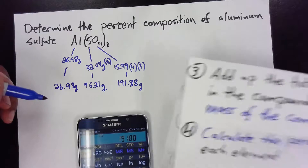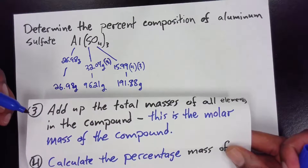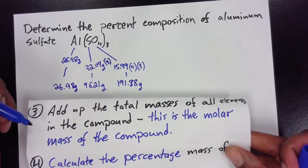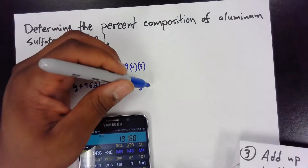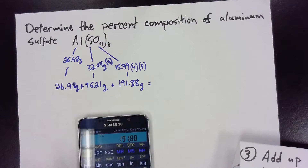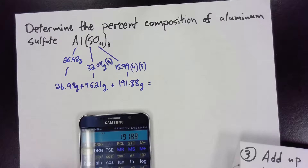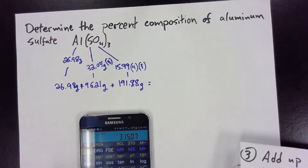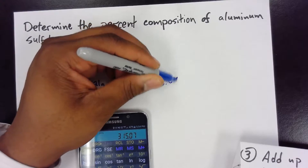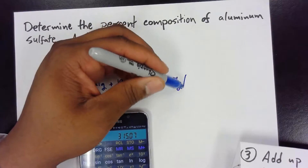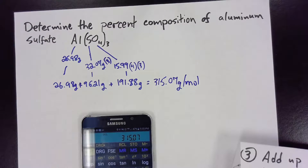Now I'm going to add up the total masses of all the elements in the compound, which will give us the molar mass. So 191.88 plus 96.21 plus 26.98 gives me 315.07 — and this is the molar mass of the compound.